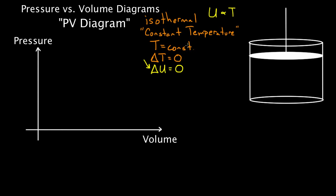You might be confused — how can you have a thermal process if there's no change in temperature? Well, you can. Things are going to happen, but in such a way that there's no change in temperature and no change in internal energy. The first law of thermodynamics holds for any thermal process: delta U equals Q, the heat that flows into a gas, plus W, the work done on the gas.